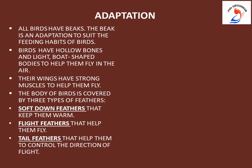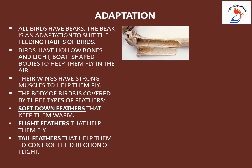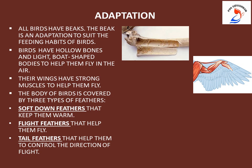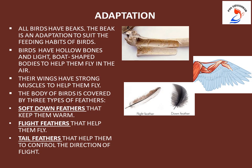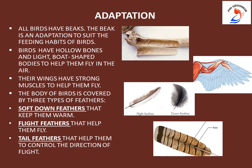All birds have beaks — a hard pointed part of the mouth — and the beak is an adaptation to suit their feeding habits; its shape and color differ from bird to bird. Birds have hollow bones and light boat-shaped bodies to help them fly. Their wings have strong muscles to help them fly. The body of a bird is covered by three types of feathers: soft down feathers which keep them warm, flight feathers which help the bird to fly, and tail feathers which help them control the direction of flight.